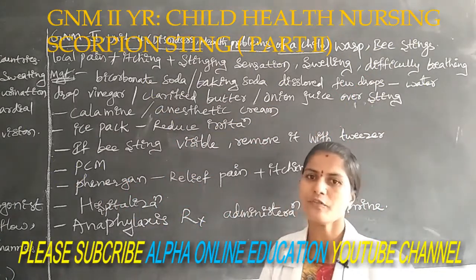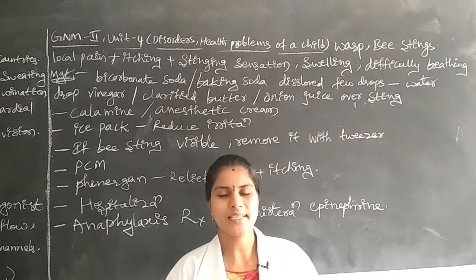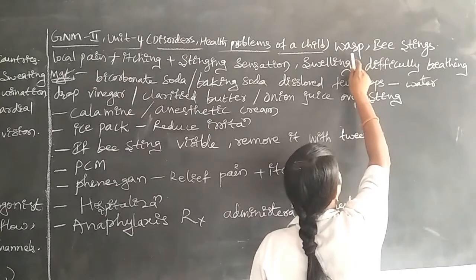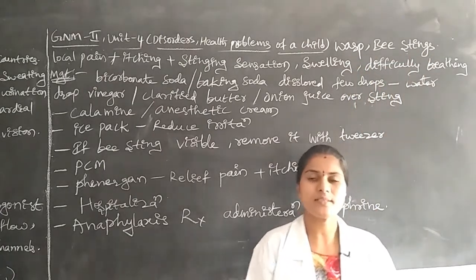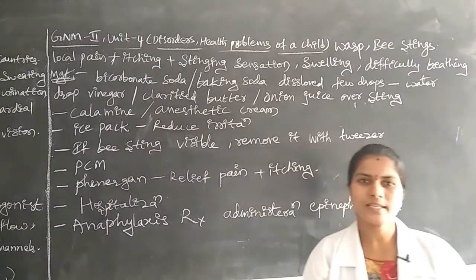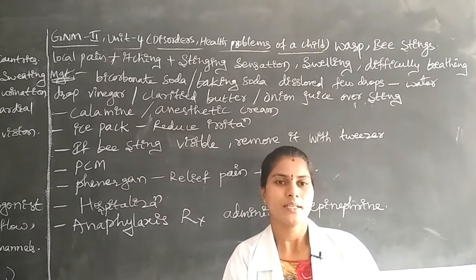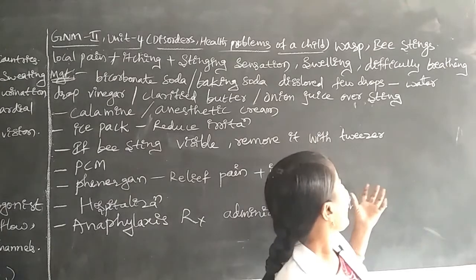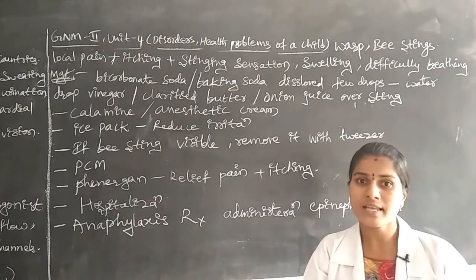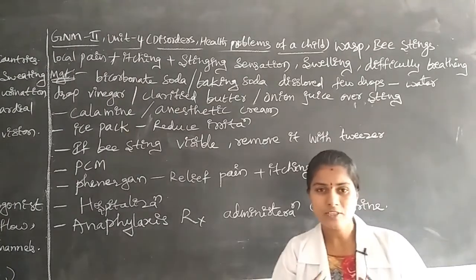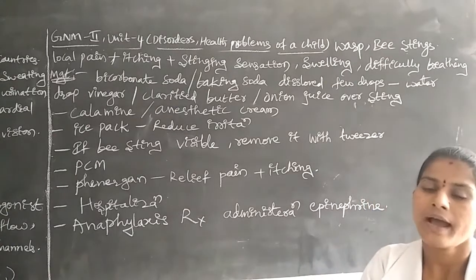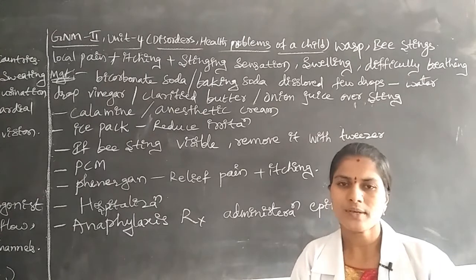Hello viewers. Today we are discussing a new condition: wasp and bee stings. It is a type of disease condition. We will discuss this in detail. Bees and wasps are commonly identified around honey. Once they give stings to the human body, the body will receive some type of poison and produce certain reactions.